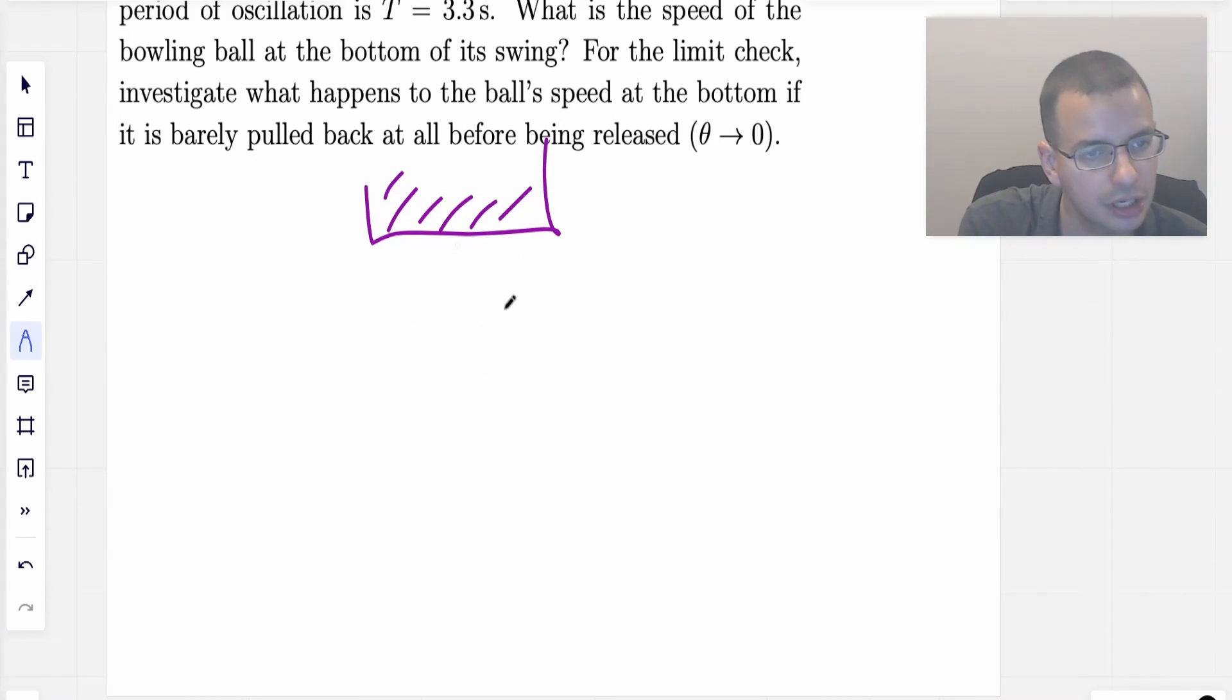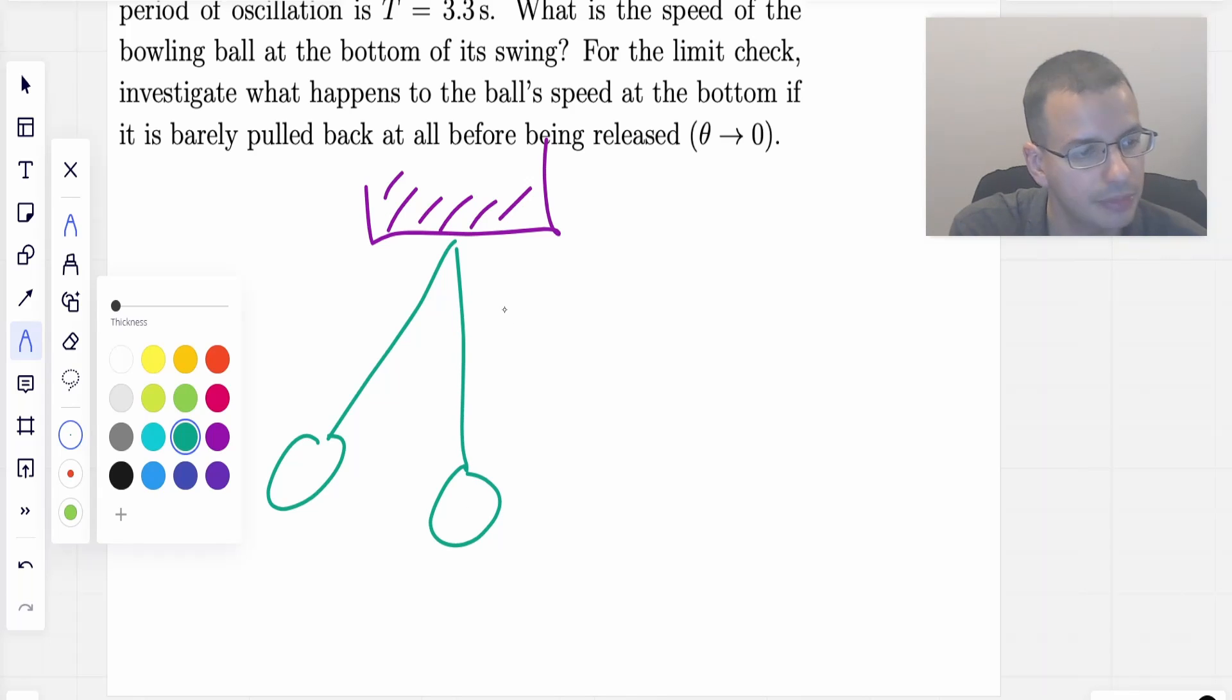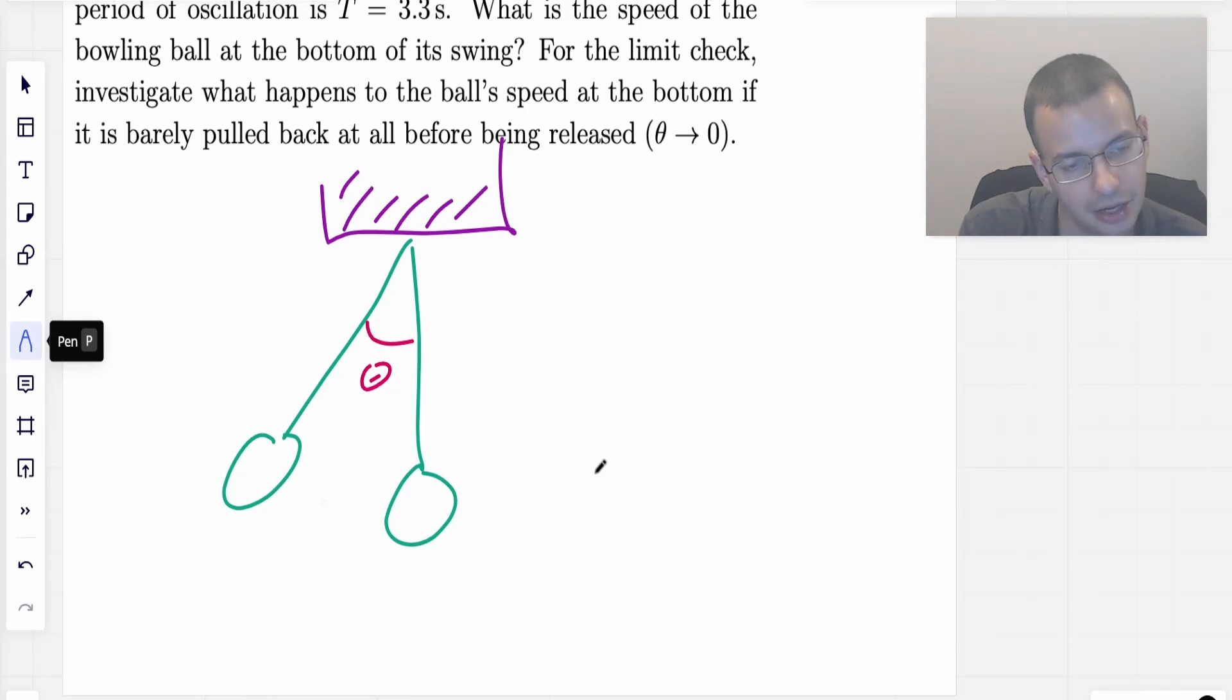So you start by drawing a picture. I'm going to draw a picture, not to scale, of a pendulum being pulled back and released. This will be theta. Yes, and it swings down, goes this way. Velocity goes that way. Okay, so as we've got the picture drawn.